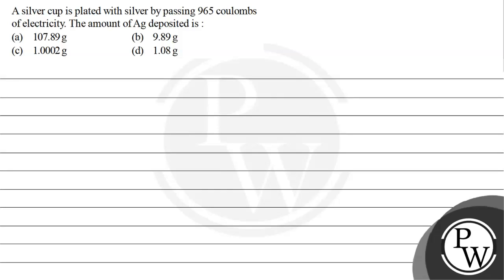Hello, let's see the question. The question says a silver cup is plated with silver by passing 965 Coulombs of electricity. The amount of Ag deposited is - let's see the key concept here.